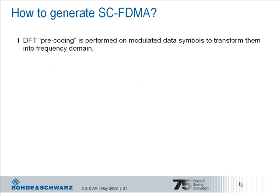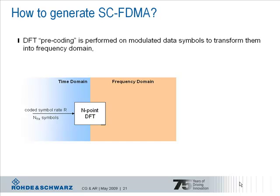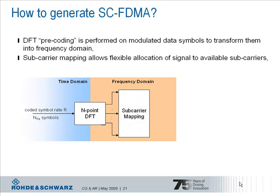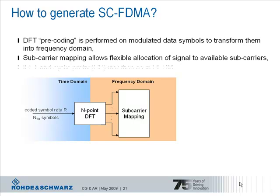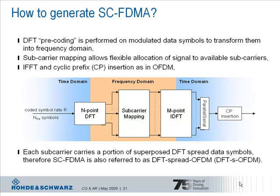How is a Single Carrier FDMA signal generated from a high-level perspective? First of all, there is an additional block in the signal processing chain. A Discrete Fourier Transform is performed on the data symbols after serial-to-parallel conversion, which transfers them from the time domain into the frequency domain. Afterwards, there is subcarrier mapping as in OFDM and an IFFT to transfer the signal back to the time domain. After parallel-to-serial conversion, the cyclic prefix is inserted. The last two blocks are the same as for OFDM, so there is no difference to the downlink signal generation chain.